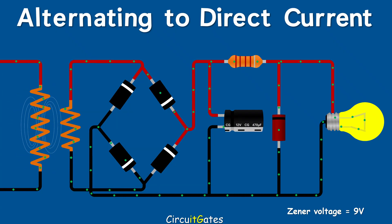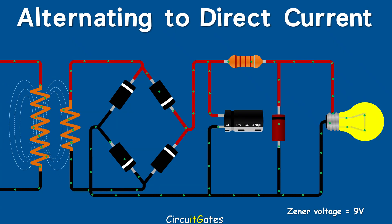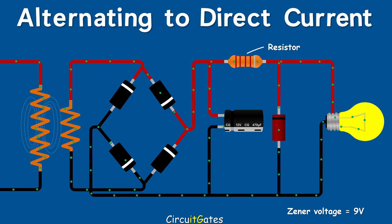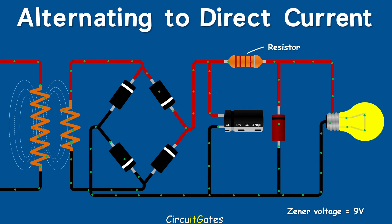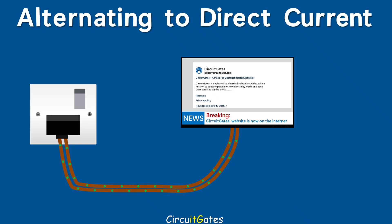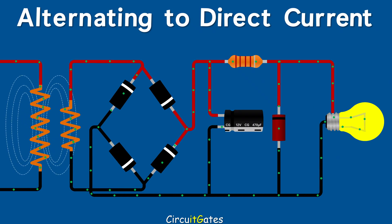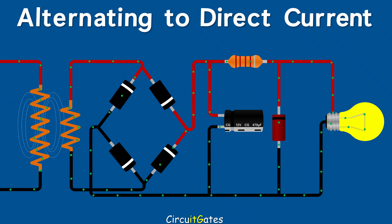Any voltage increase above the Zener voltage of 9V causes the Zener diode to act as a short circuit to that voltage, which stops further increase in current and voltage through the load. The resistor connected in series with the load and the Zener diode prevents an increase in current through the Zener diode path to a value that could cause damage. When there is a shorted path in an electrical circuit, all the electrical current uses that path because of its zero resistance. Any voltage above the Zener voltage uses the Zener diode path instead of the load path, thus maintaining a constant voltage across the load.